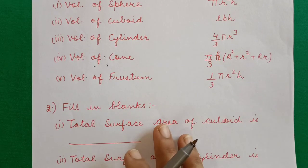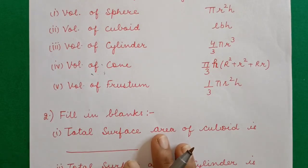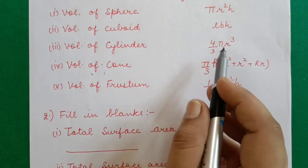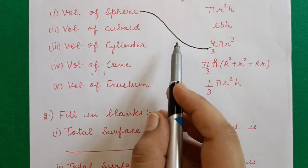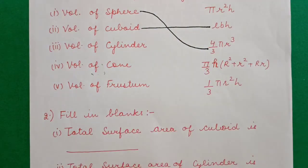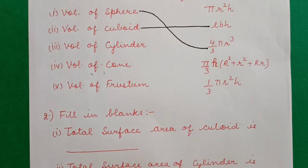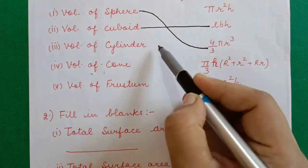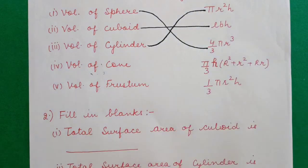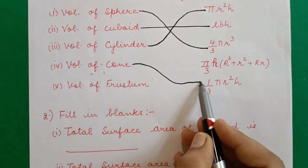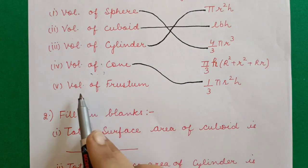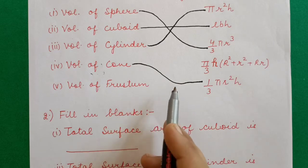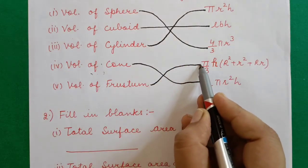Question 1: Match the following. Volume of sphere = (4/3)πr³. Volume of cuboid = l×b×h (length × breadth × height). Volume of cylinder = πr²h. Volume of cone = (1/3)πr²h — note the only difference from cylinder is the (1/3) factor. Volume of frustum = (1/3)πh(R1² + R1R2 + R2²).